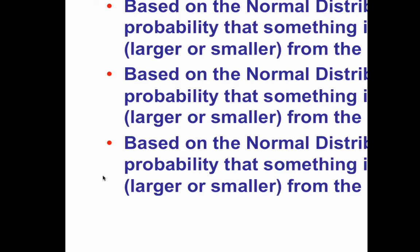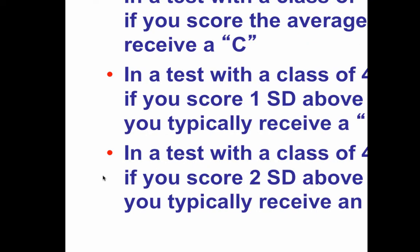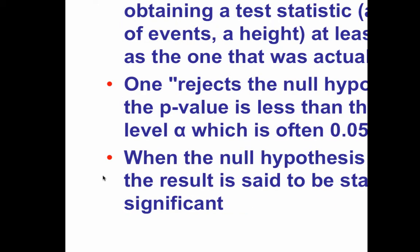We use this significance measure to grade students, which is particularly common in universities with large classes of 400 students. If you score the average in the middle, you get a C. If you score about one standard deviation above the average, you get a B. Two standard deviations above gives an A or A+. One standard deviation below is a D, and two standard deviations below is an F. That's partly why we have this five-letter grading scheme.